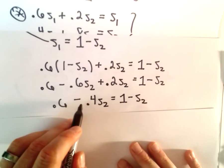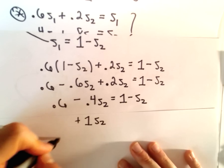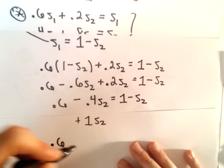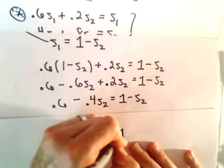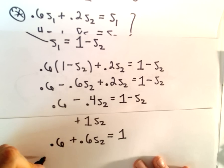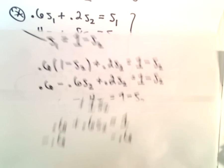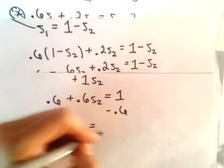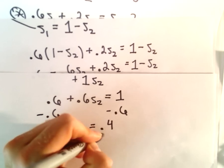If we add S₂ to both sides, we'll have 0.6, so negative 0.4S₂ plus 1S₂, that's going to leave us with positive 0.6S₂. On the right we still have our 1 left over. Now I'm going to simply subtract 0.6 from both sides. So we've got 0.6S₂ equals 0.4.